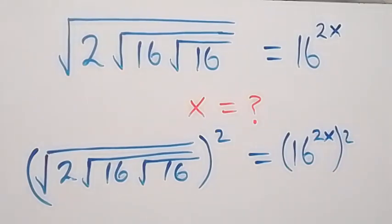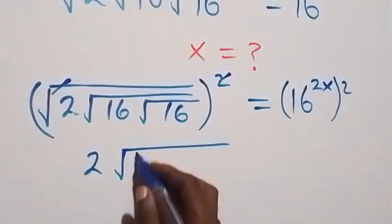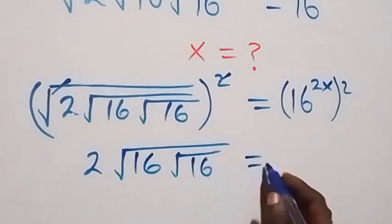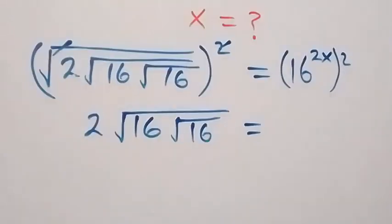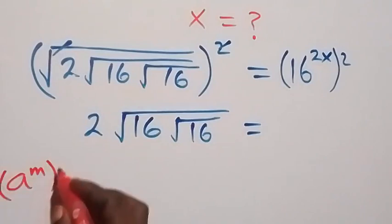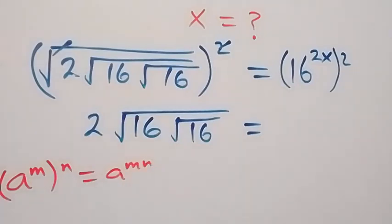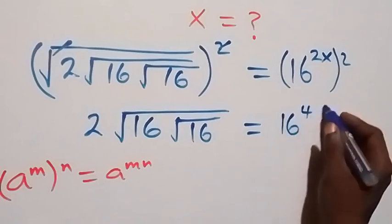From here, this square cancels the square roots. Then we have to multiply square root of 16, then also root 16 inside. This is equal to — here this power we multiply from the law of indices: a raised to power m raised to power n is the same as a raised to power m times n. So it implies we have 16 raised to power 4x.